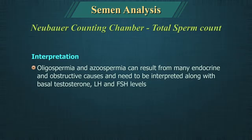Oligospermia and azoospermia can result from many endocrine and obstructive causes, and results need to be interpreted along with basal testosterone, luteinizing hormone and follicle stimulating hormone levels.